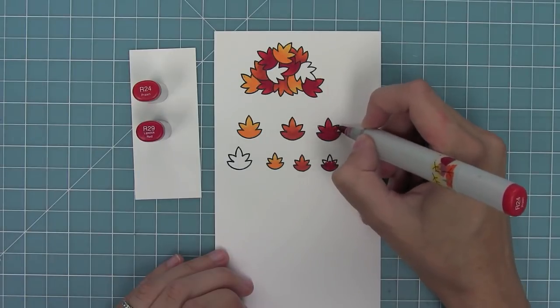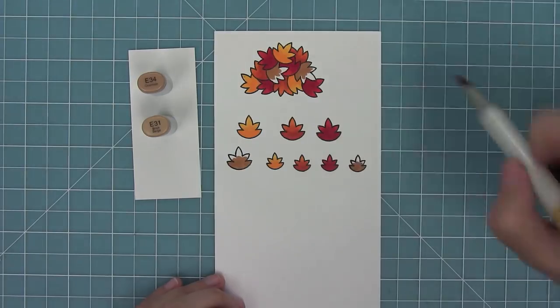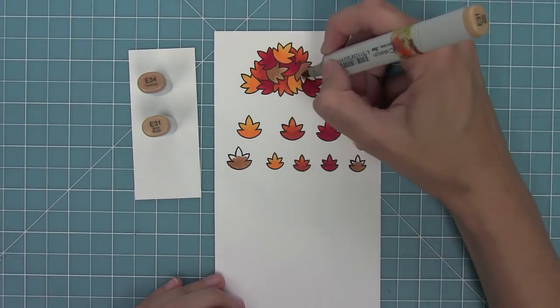Last up I'm going to add some brown leaves. I want this to really look like a leaf pile with some leaves that just don't have color anymore. We'll add the darkest in and blend that out with the lightest once again.